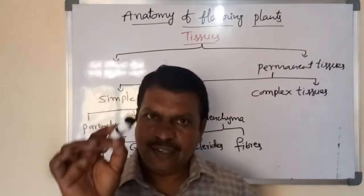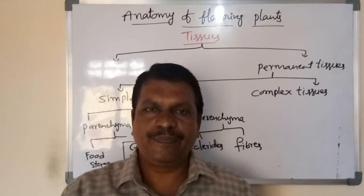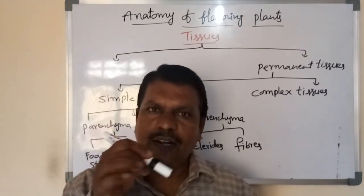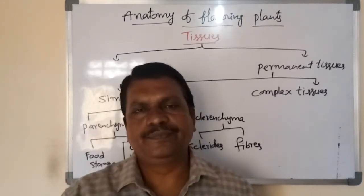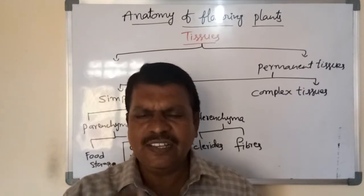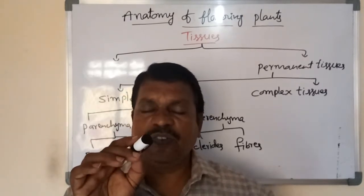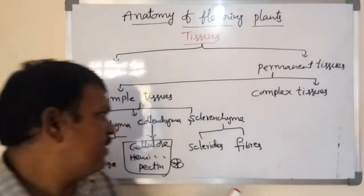Collenchyma has a large central vacuole and peripherally located cytoplasm and nucleus. These are the general characteristic features of collenchyma.